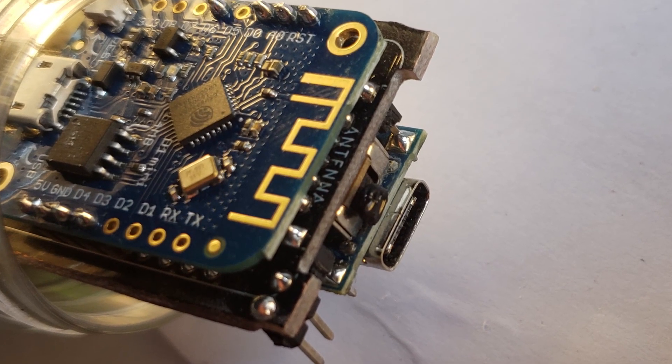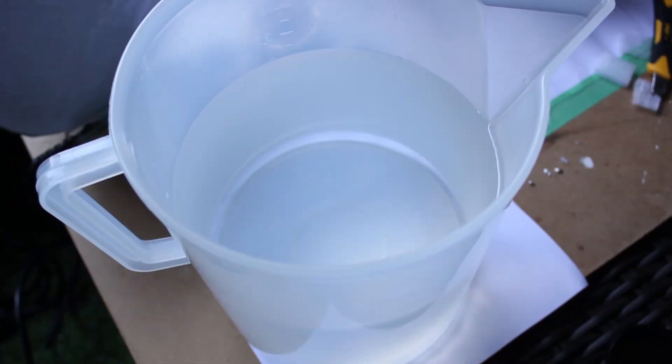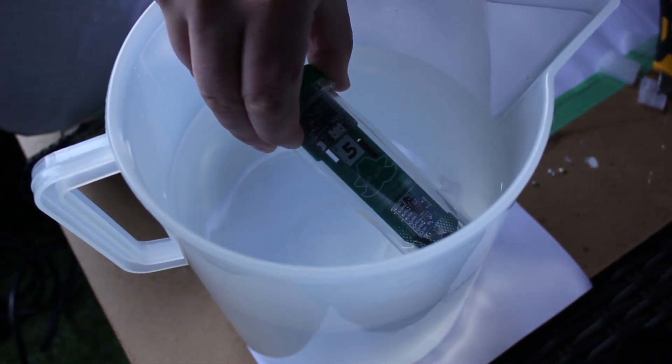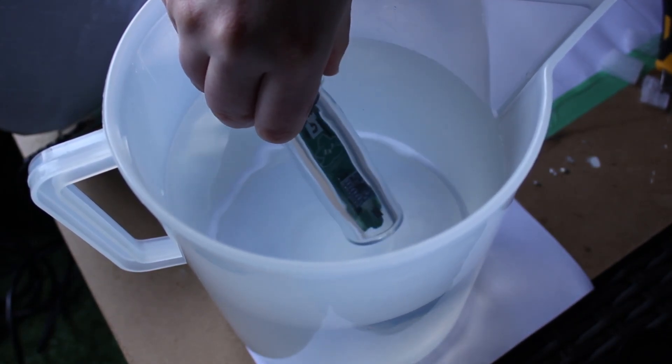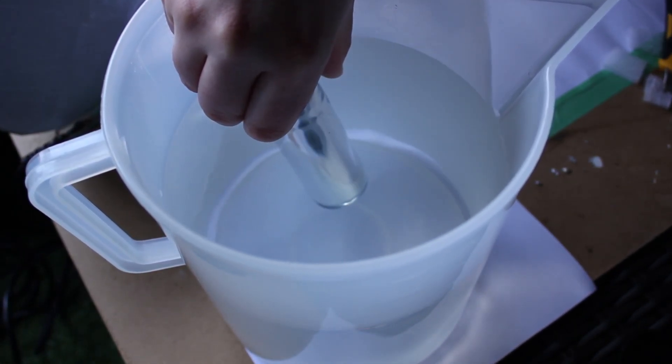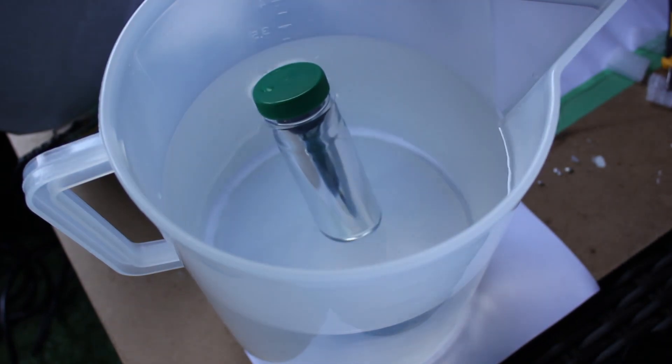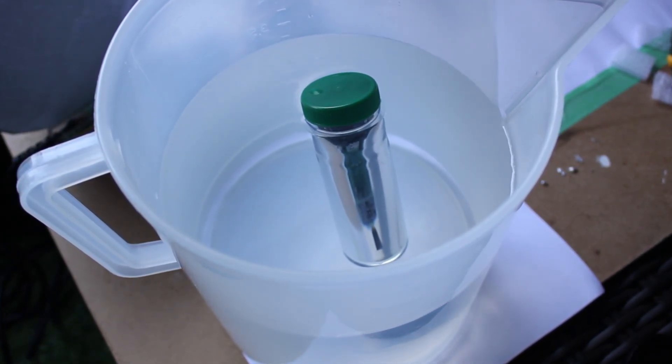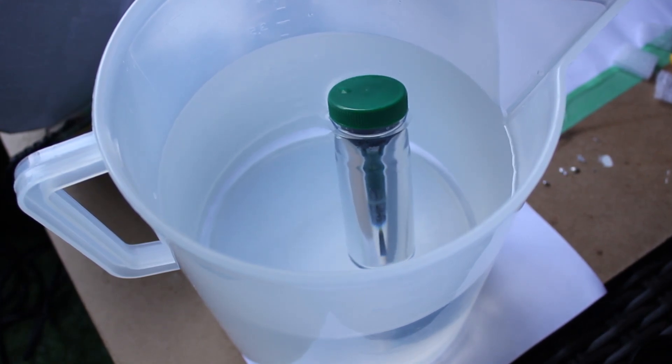Although those values aren't quite as good as the Jeffrey, they are still within the plus minus 5 degrees stated in the official iSpindel FAQ. In conclusion, we calibrated seven iSpindles today. If you want to see the specifics and all the numbers, link to my blog in the description down below.